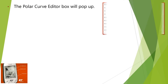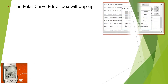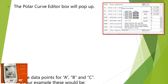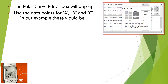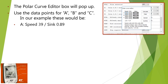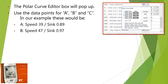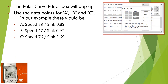The Polar Curve editor box will pop up. Use the data points for A, B, and C. In our example, these would be: A — Speed 39, Sink 0.89; B — Speed 47, Sink 0.97; and C — Speed 76, Sink 2.69.